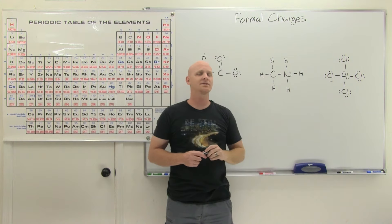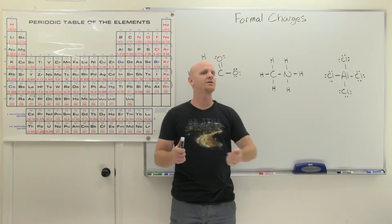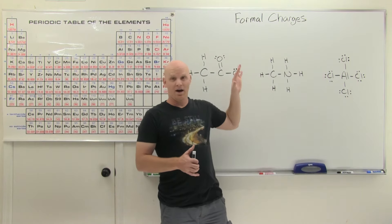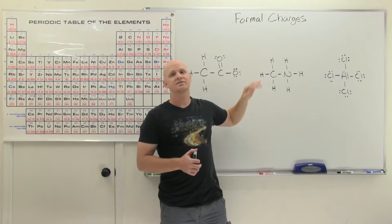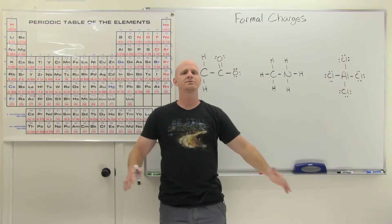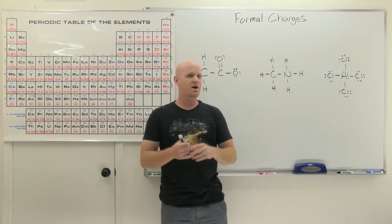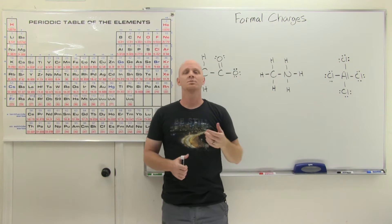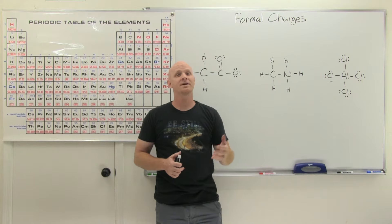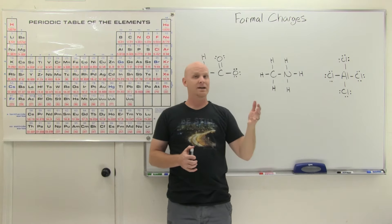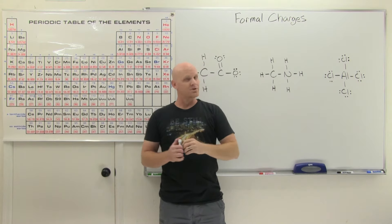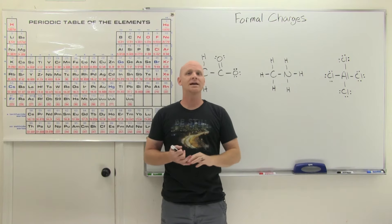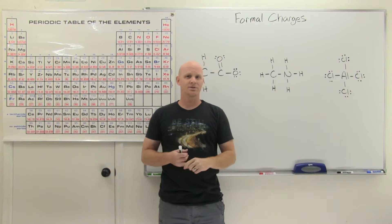Formal charges — that's what this next lesson in my brand new organic chemistry playlist is going to be about. This is the second lesson in the first chapter, which is all a review of gen chem. We started off with Lewis structures, now we'll talk about formal charges, then move on to hybridization and valence bond theory, followed by molecular orbital theory, and finish with a discussion of polarity and intermolecular forces.